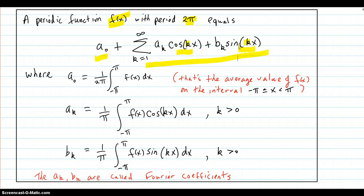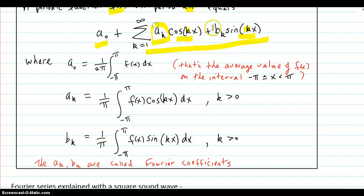Okay, and where are those a k's and those b k's coming from? Now, according to Fourier, they come from these formulas here. a zero is equal to this. And that's just the average value of the function on the interval negative pi to pi.